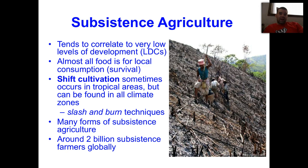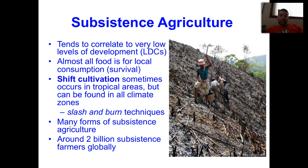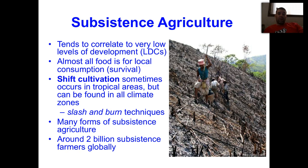Defining subsistence agriculture: it is primarily found in LDCs, most of the food is used for consumption, and we often find it in more tropical regions. Shifting agriculture is a common form of subsistence agriculture, though it is not the most common — we'll get to that later.